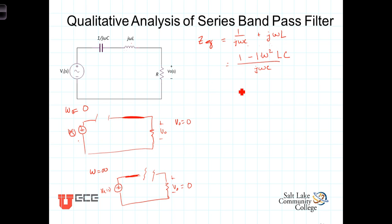To find out what that is, let's set the numerator equal to 0. Here we have 1 - ω²LC = 0, or ω²LC = 1, or ω² = 1/(LC), or omega equals 1 over LC up here.